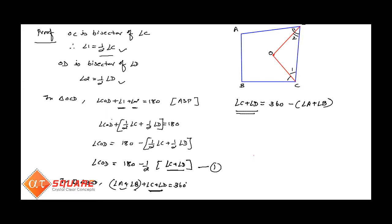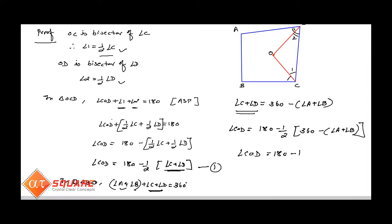Putting the value of angle C plus angle D into the equation, angle COD is equal to 180 minus half of angle C plus angle D. Substituting, the 180s cancel, and we get angle COD is equal to half of angle A plus angle B. Hence proved.